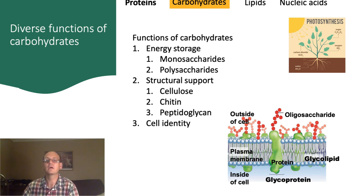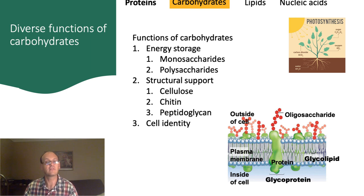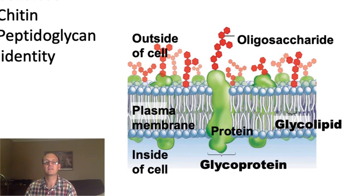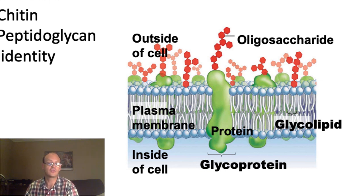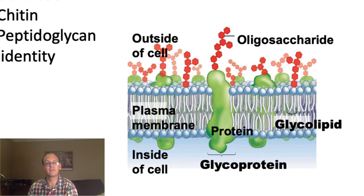As we've already seen, carbohydrates also provide structural support. Polysaccharides are cross-linked together to form cellulose in plants, chitin in insects, and peptidoglycan in bacterial cell walls. The last main function is the use of carbohydrates in cell recognition and identity. Proteins on the cell membrane have carbohydrates attached to them — usually referred to as oligosaccharides because they have several, but not many, sugar subunits. The exact identity of these oligosaccharides is cell-specific, allowing cells to recognize each other's surfaces, and serving as a primary mechanism for the immune system to distinguish cells that are part of our body from foreign cells.